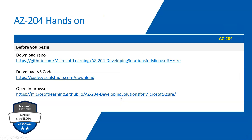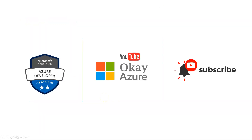Before we dive into the practical session, make sure you have the following ready: download the Microsoft Azure Git repo, download VS Code, and have the lab URL open in your browser. If you're new, watch the very first video of Lab 1 where I explain how to download the repo and install VS Code. Thank you, and I'll catch you in the next video.